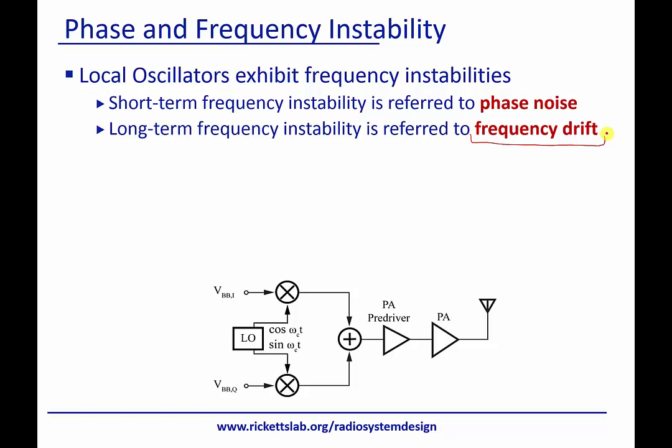The other non-ideality is phase noise. In the frequency domain, if this is our local oscillator, phase noise manifests as little sidebands, because the oscillator is moving back and forth ever so slightly. This happens because the phase of the signal is changing randomly, and every time there's a phase change, there's a slight frequency change. This is probably beyond what we're used to thinking about in terms of the frequency domain for this course, but I'm going to show you what it looks like in the time domain if we had a clock with phase noise.